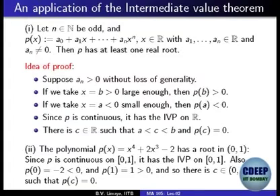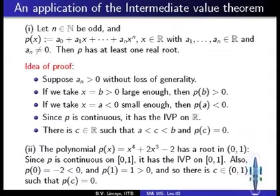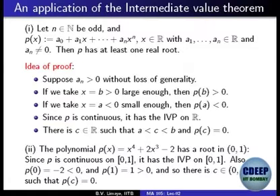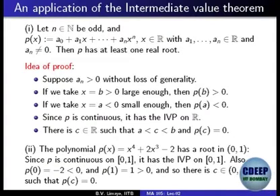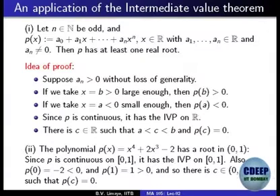I want to give you an application of the intermediate value theorem, which says that every continuous function has the intermediate value property. The graph shows that the continuous function starts at f(a) and goes to f(b). For any number r between f(a) and f(b), this number r is the value of the function at some point between a and b. If you draw a horizontal line across r, it must cut the graph. This is the intermediate value theorem.